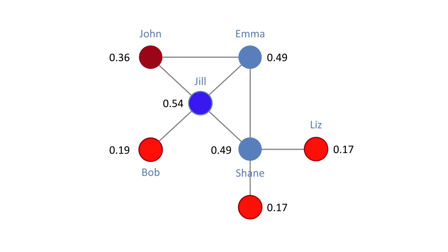We've changed the graph just a little bit. We still have our players — Jill, Emma, and Liz — but I've changed the color coding to give a sense of how high the eigenvector centrality is. Darker blue nodes have higher eigenvector centrality, and as they get red and brighter they become less important.